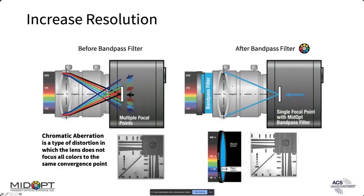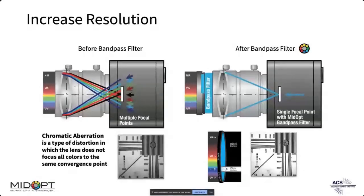Bandpass filters can also help with resolution. There's a type of distortion in lenses called chromatic aberration, which happens when the lens cannot focus all wavelengths at the same convergence point — different wavelengths have different refractive indexes and bend differently. This causes some loss of resolution. But if your application only needs a certain color, using an optical filter limits the incoming wavelengths so the lens doesn't have to focus all of them, gaining resolution.